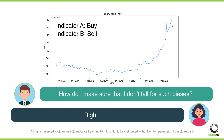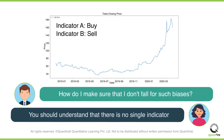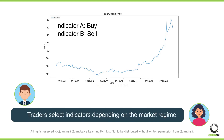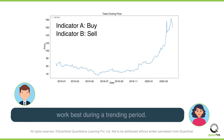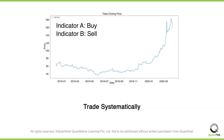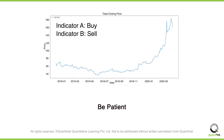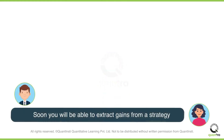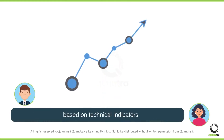To avoid such biases, you have to understand that no single indicator works all the time. Traders select indicators depending on the market regime — for example, a trend indicator will work best during a trending period. You should also trade systematically and not let emotions drive your trading decisions. Be patient when a trade seems to go in the opposite direction, but make sure you cut your losses before it's too late. Soon you will be able to extract gains from a strategy based on technical indicators.